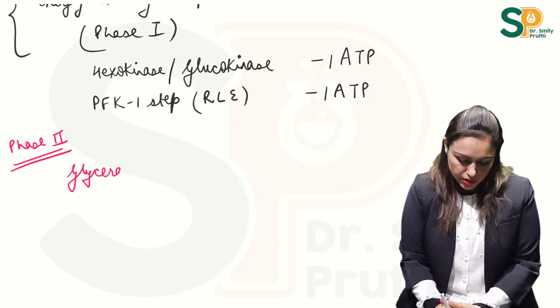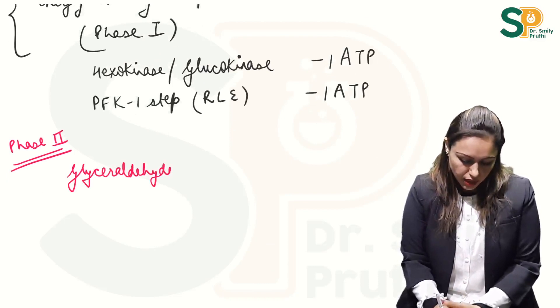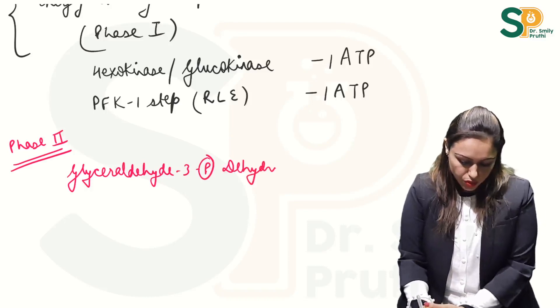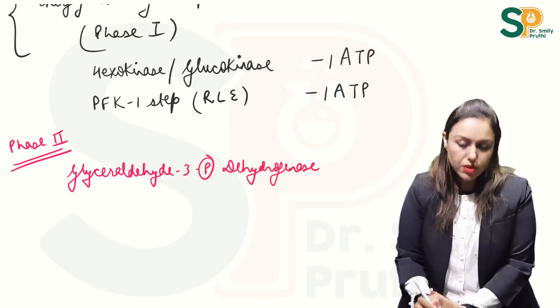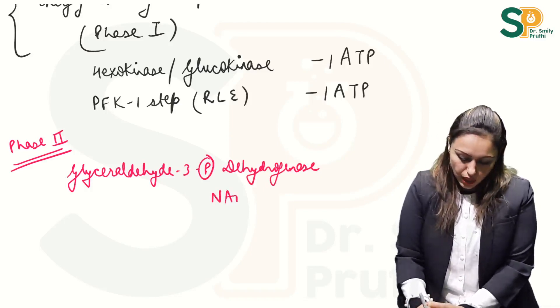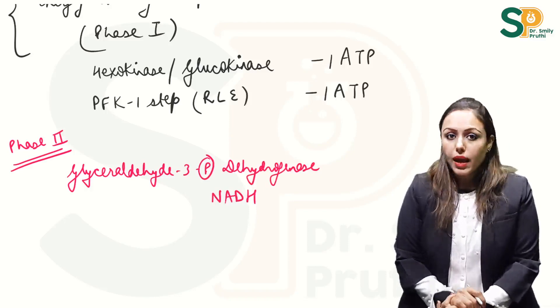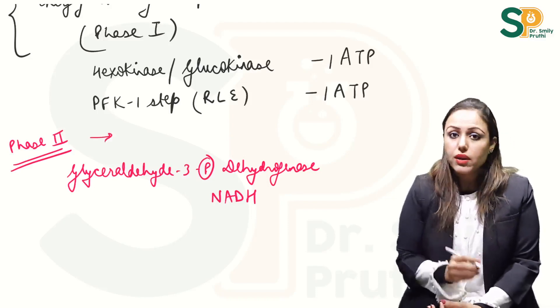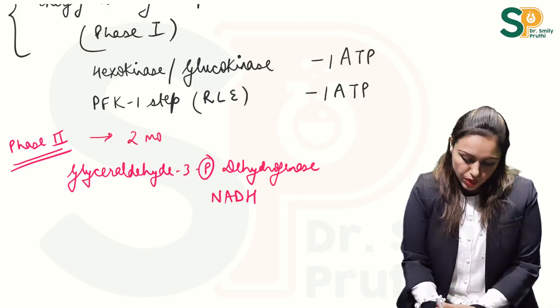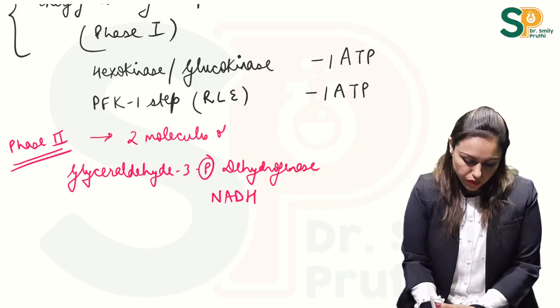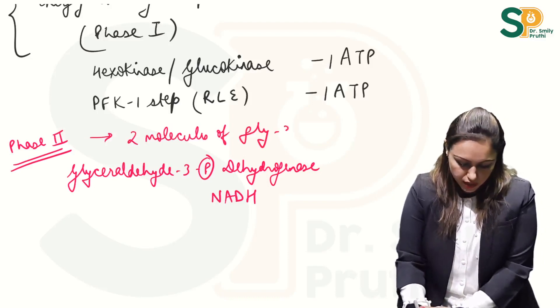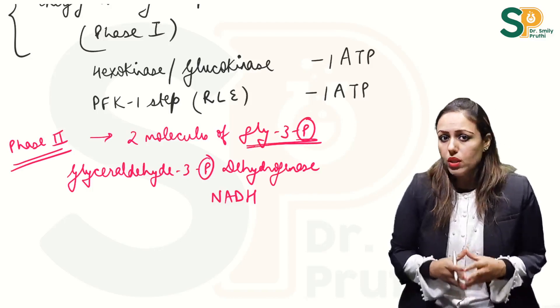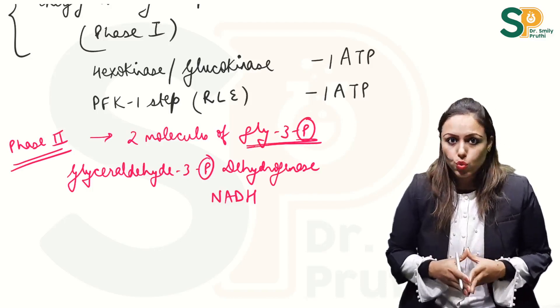The first enzyme step is glyceraldehyde-3-phosphate dehydrogenase enzyme step, which is producing NADH.